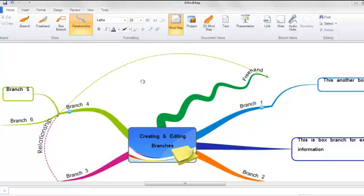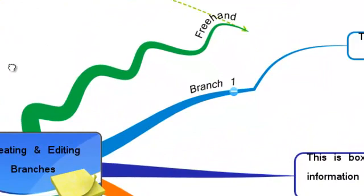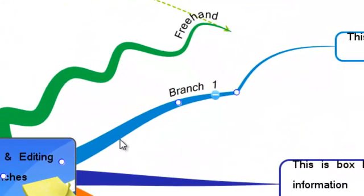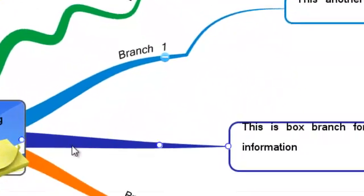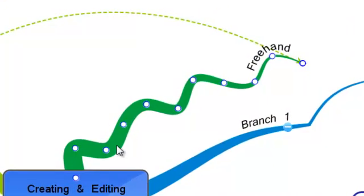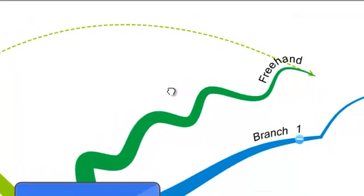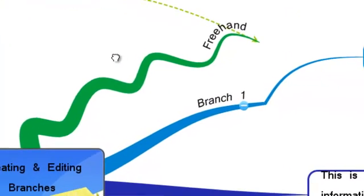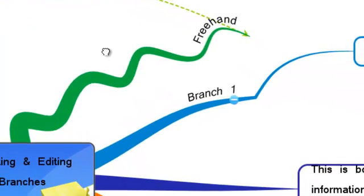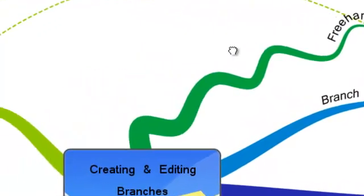Now you should be able to create and edit branches. You can create normal branches, box branches, freehand branches, and relationships. You can add text, edit and format the text, and edit the shape and position of your branches.